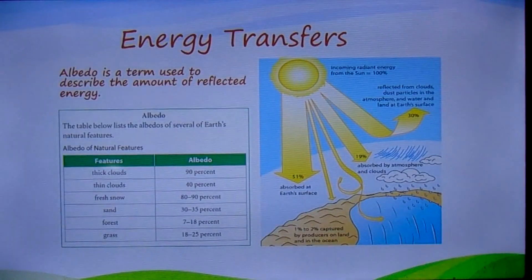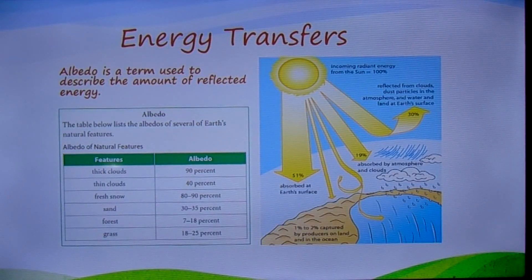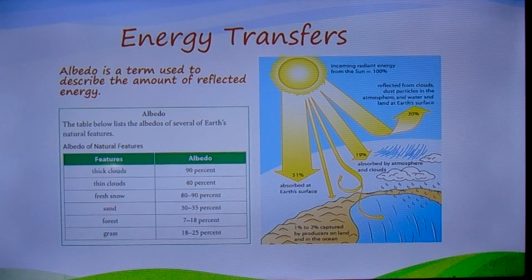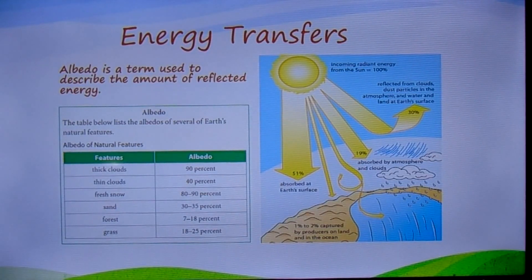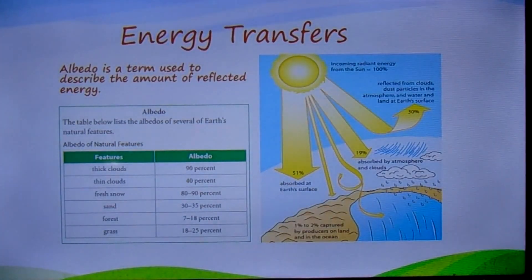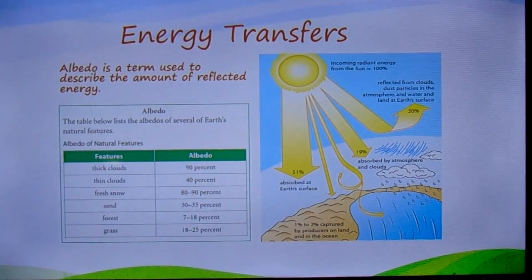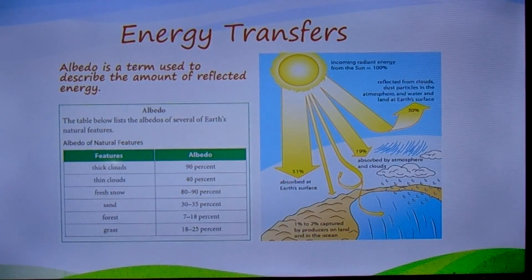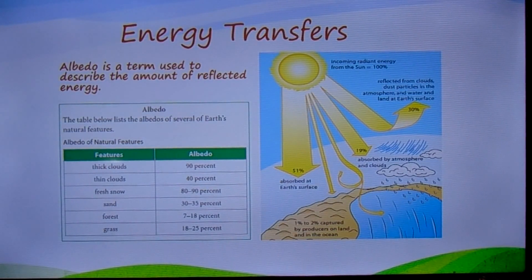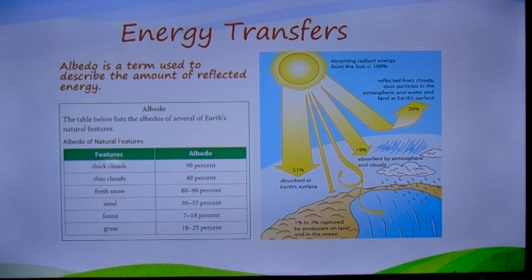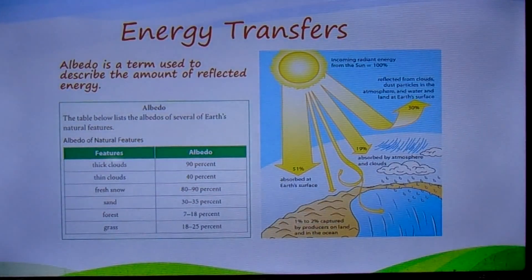Our discussion on energy transfers would be incomplete without talking about the energy available to producers. About 30 percent of the energy is reflected from clouds, particles in the atmosphere, or from land or the surface of the ocean back into space. Albedo is the term used to describe the amount of reflected energy. Earth's albedo varies from place to place, but the average is about 30 percent.